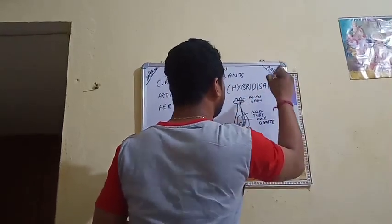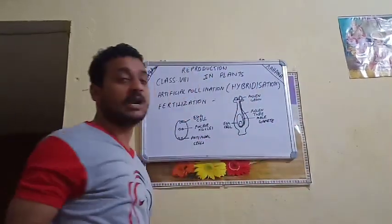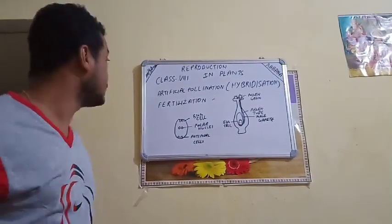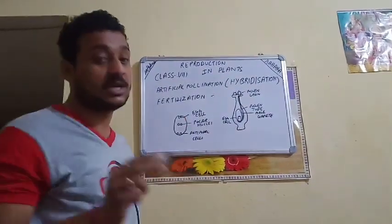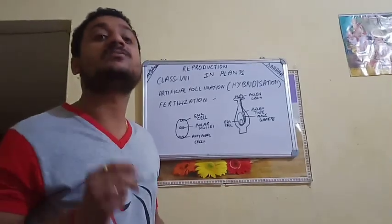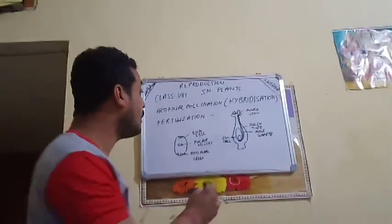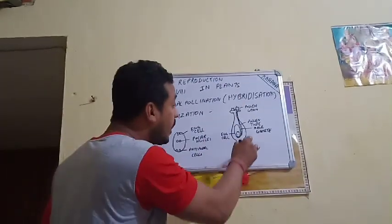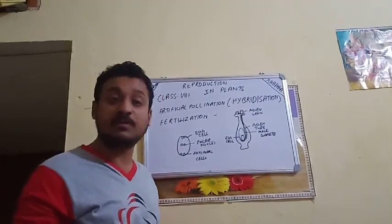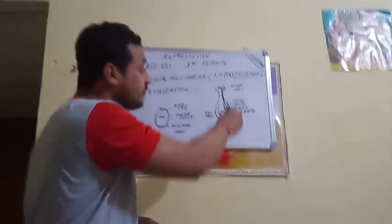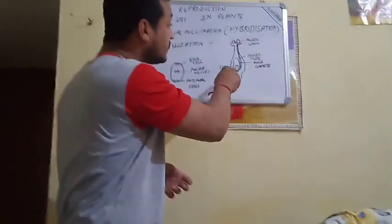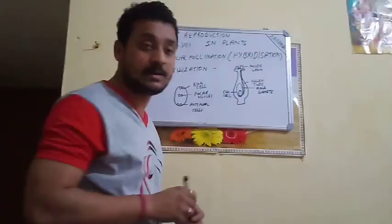Hybridization means the technique done by human beings — that is, by artificial pollination. I hope you understand this. Next is fertilization. Here we need to be extra careful. I have made a rough diagram of the female reproductive system of the flower.